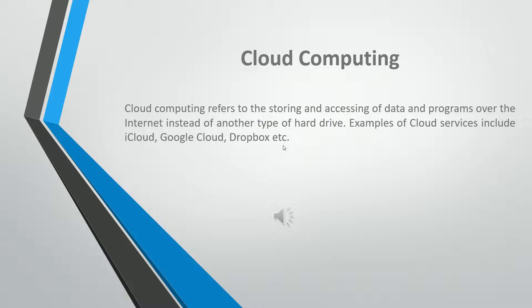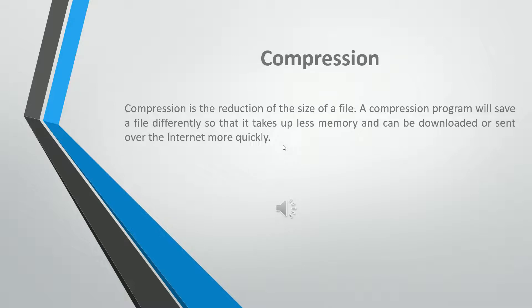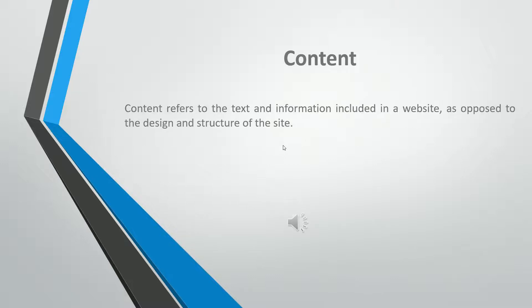Cloud computing refers to the storing and accessing of data and programs over the internet instead of a local hard drive. Examples of cloud services include iCloud, Google Cloud, and Dropbox. Compression is the reduction of the size of a file. A compression program will save a file differently so that it takes up less memory and can be downloaded or sent over the internet more quickly. Content refers to the text and information included in a website, as opposed to the design and structure of the site.